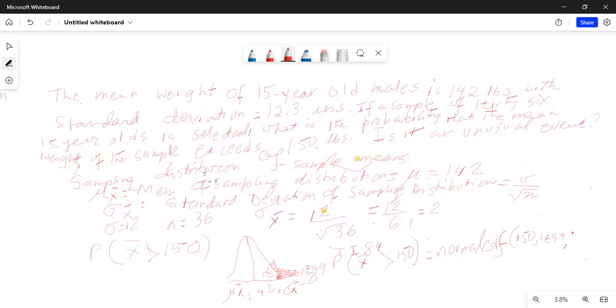Your mean is 142 but your standard deviation is not the standard deviation of the population. It is standard deviation of the sampling distribution which we have determined to be 2 because it is sigma divided by square root of 36. So let's work with our calculator.